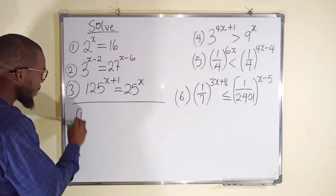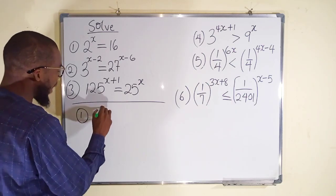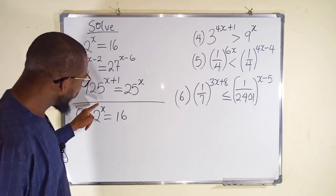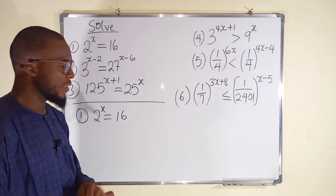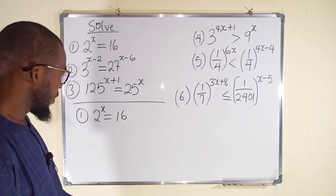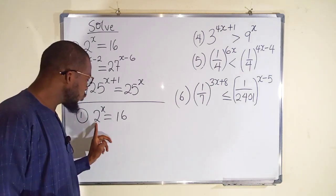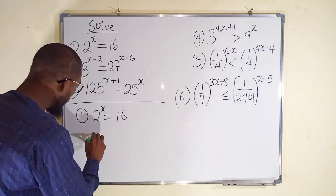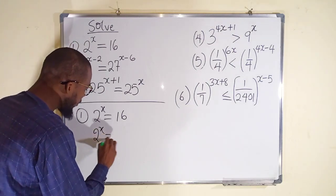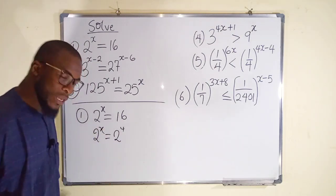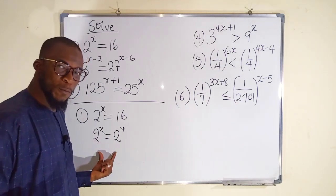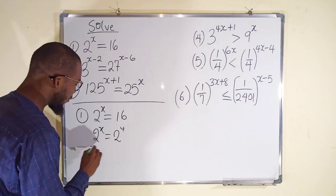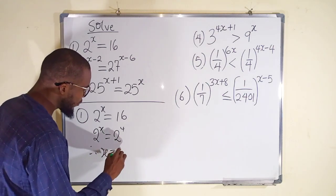The first one: we have 2 to the power x, and to the right hand side we have 16. We want to find the value of x that satisfies this equation. We know that we can raise 2 to the power of 4 to equal 16. So 2^x equals 2^4. Since we have common bases, the powers are also the same. Therefore x is equal to 4.